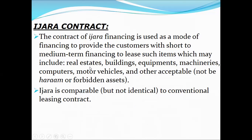What kind of items are included in an Ijara contract? They include real estate, buildings, equipment, air conditioners, computers, motor vehicles, and other acceptable assets — meaning assets that are not haram or forbidden. Haram or forbidden assets are excluded. All other properties and physical assets can be used in an Ijara contract.